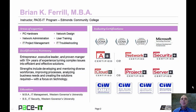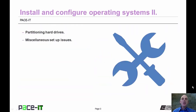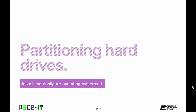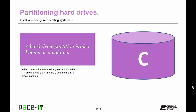I'm Brian Farrell, and welcome to PACE IT's session on Installing and Configuring Operating Systems, Part 2. Today we're going to talk about partitioning hard drives and some miscellaneous setup issues. A hard drive partition is also known as a volume — that's what gets the drive letter. So the C drive is both a volume and a partition. Partitioning involves the logical division of a hard drive into designated spaces.